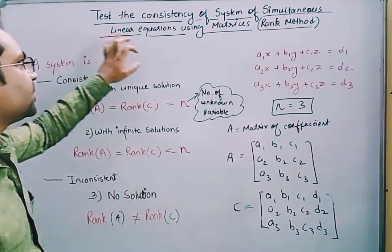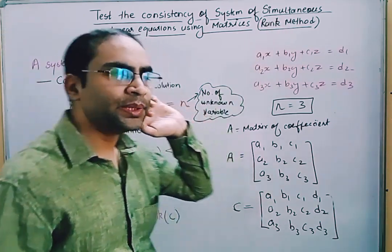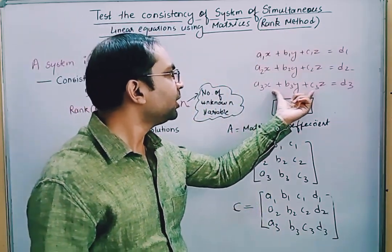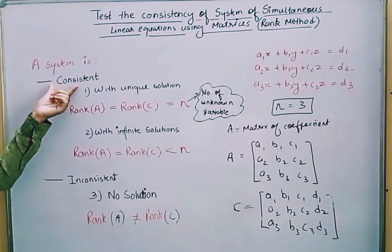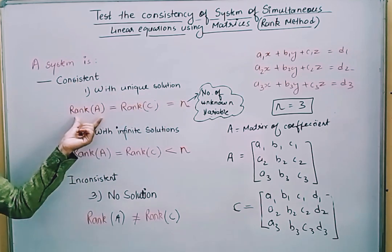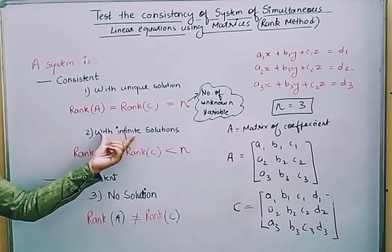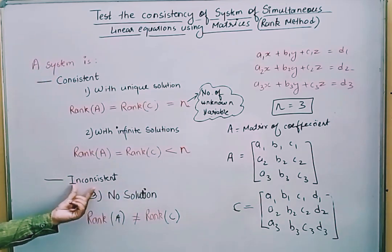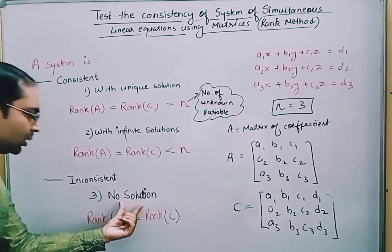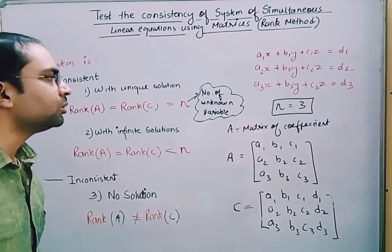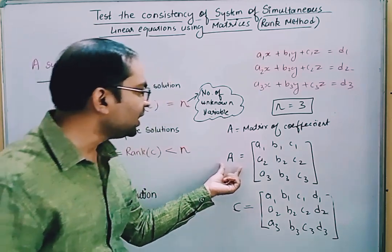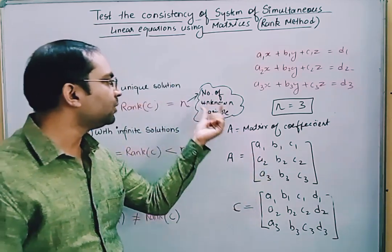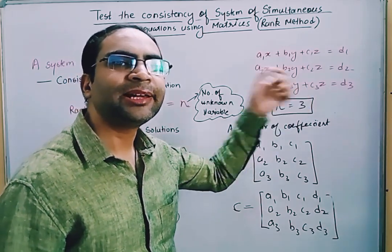We have seen how to test consistency using matrices and the rank method. The system of linear equations can be consistent with unique solution whenever rank of A equals rank of C equals N, with infinite solutions when rank of A equals rank of C but is less than N, and inconsistent with no solutions when rank of A is not equal to rank of C. Here, matrix A is the coefficient matrix, C is the augmented matrix, and N is the number of unknown variables.